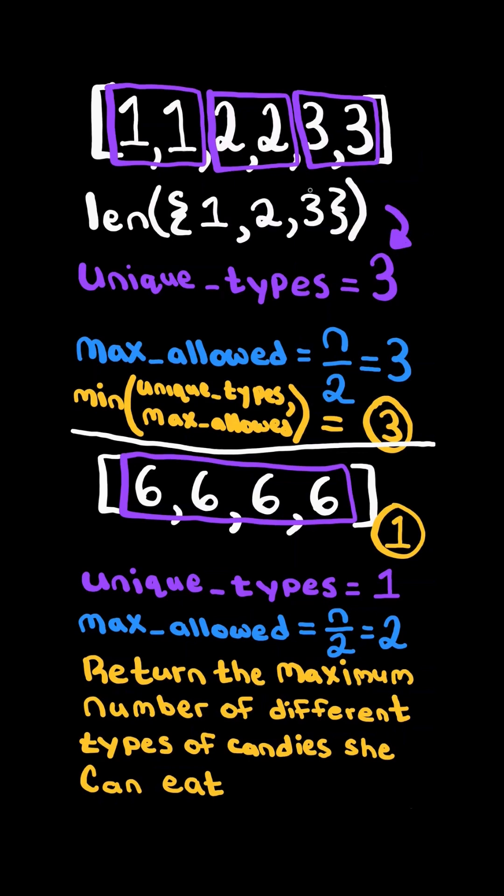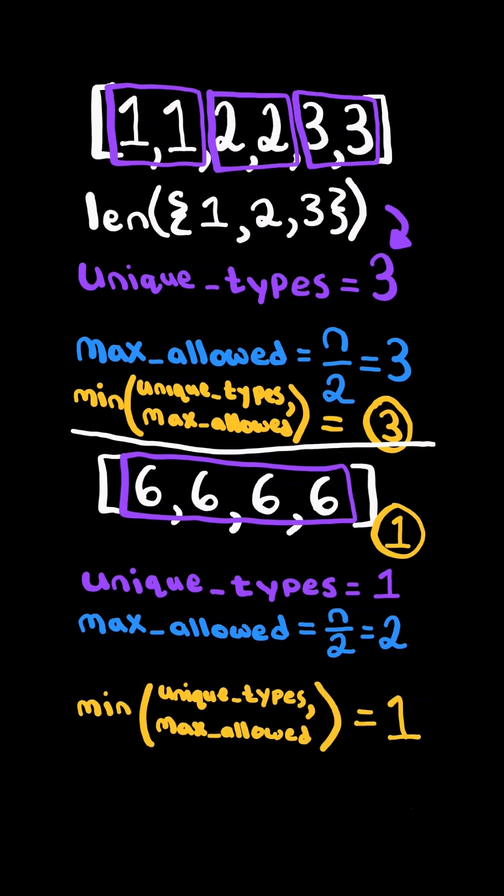And so the maximum number of different types of candies she can eat is equal to the minimum of unique types and max allowed. And we can do a similar process with the second example.